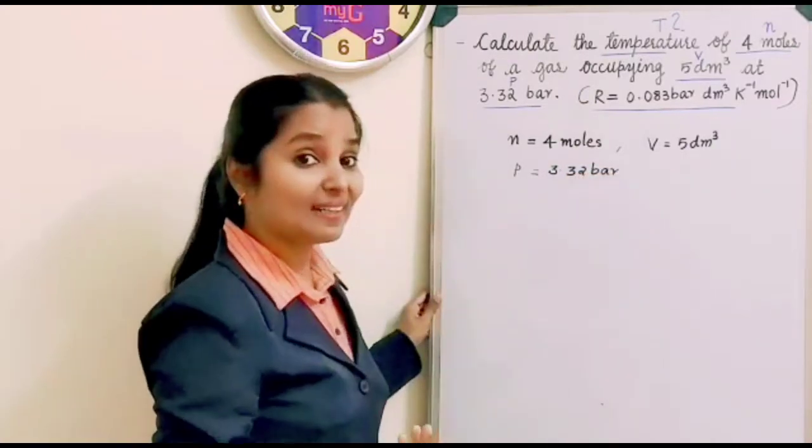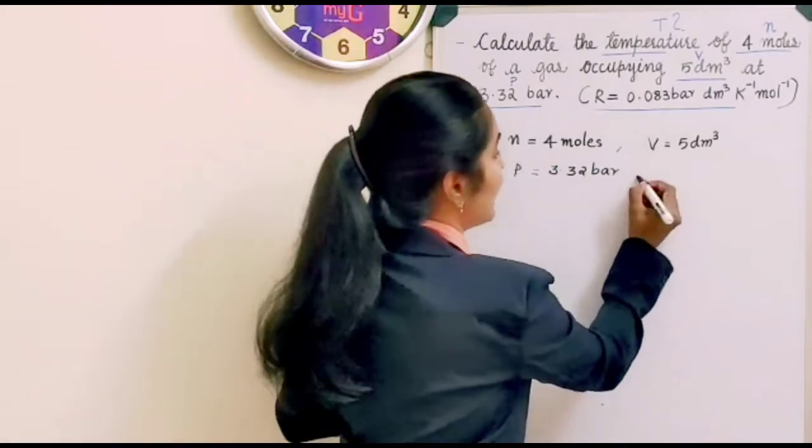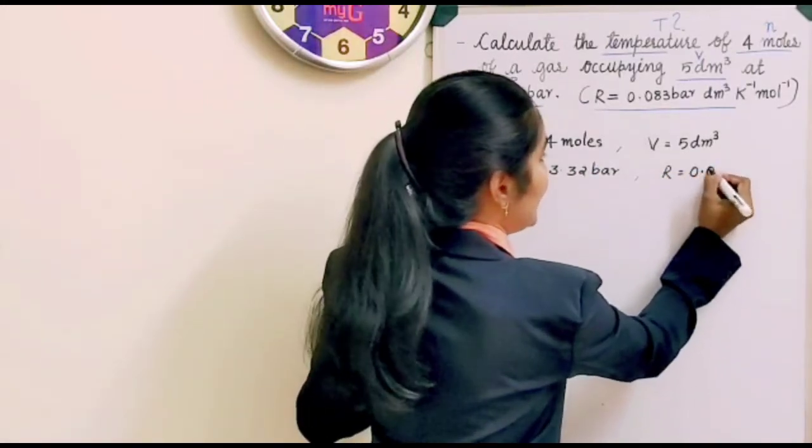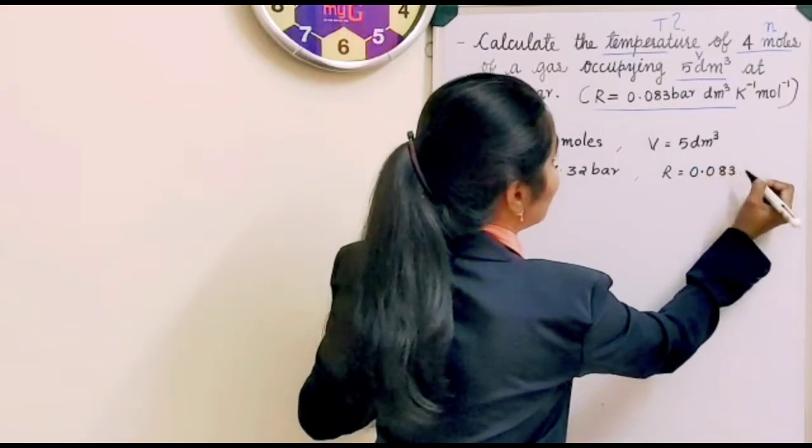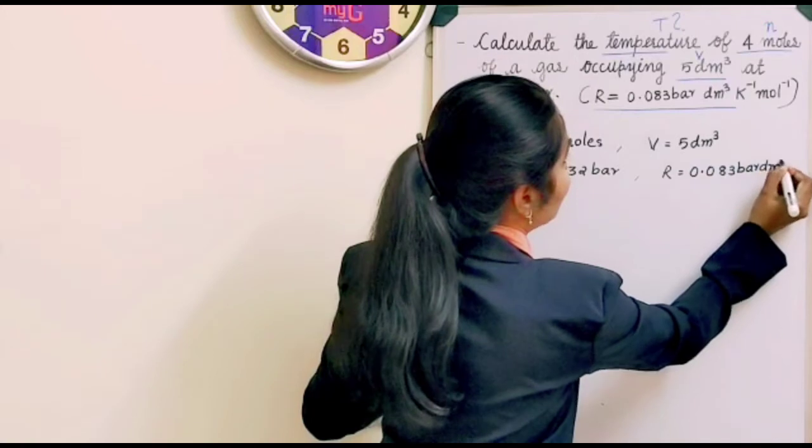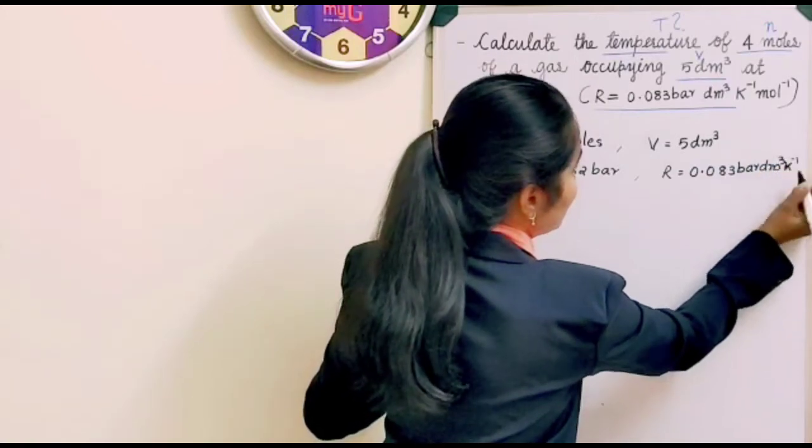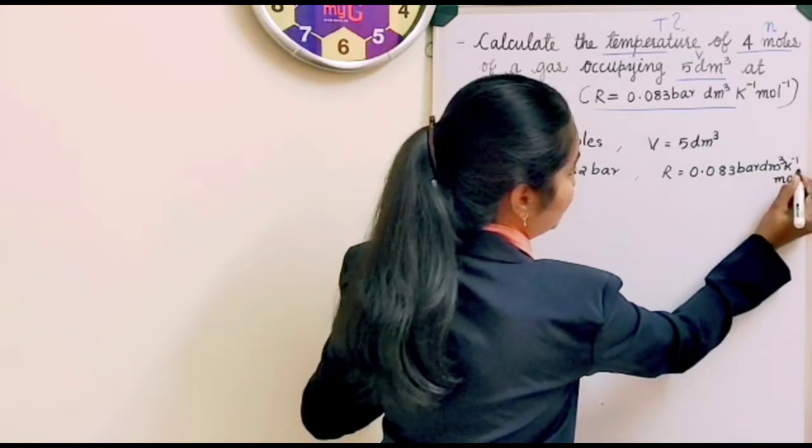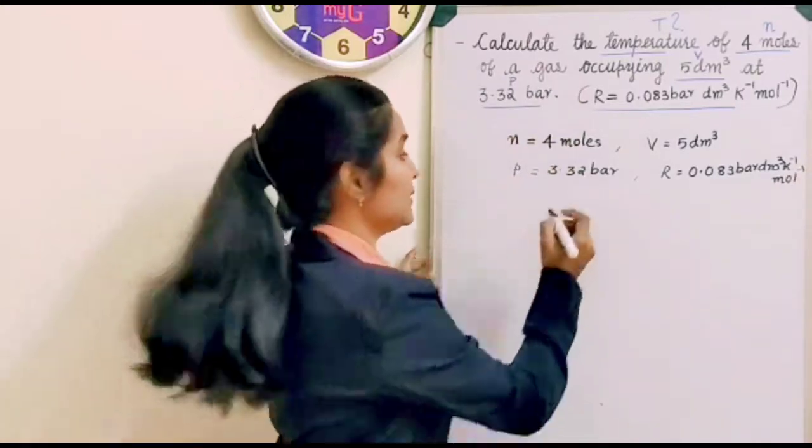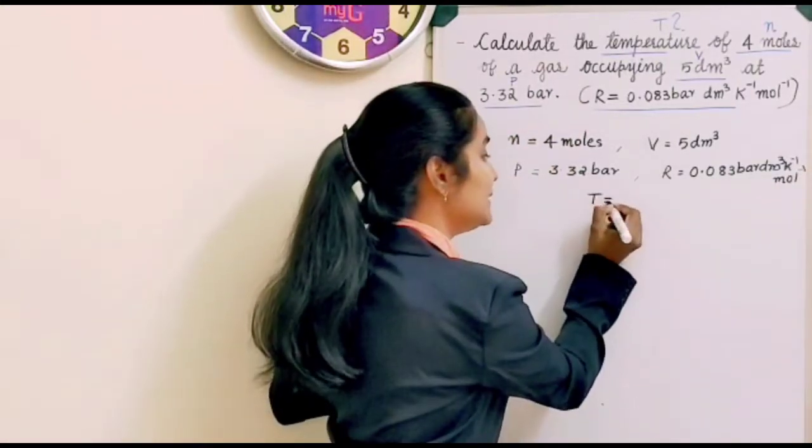And then R. Gas constant is given. R is equal to 0.83 bar dm³ K⁻¹ mol⁻¹. And then what we have to find out? We should find out T.